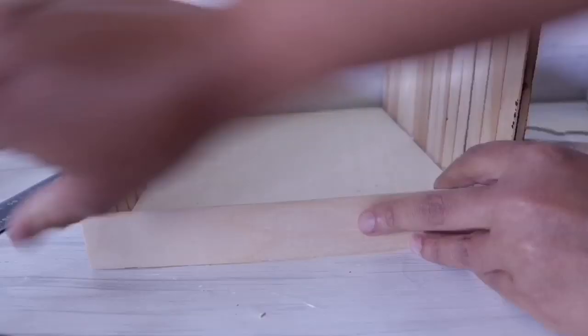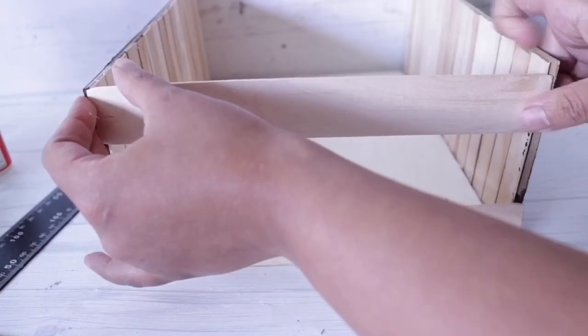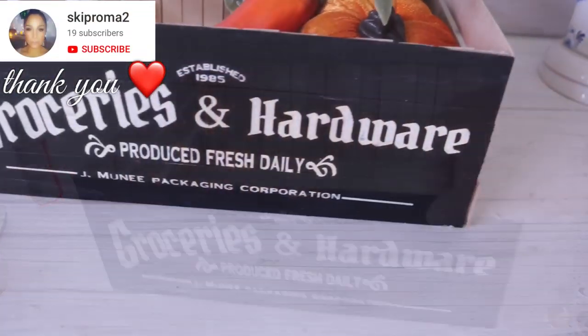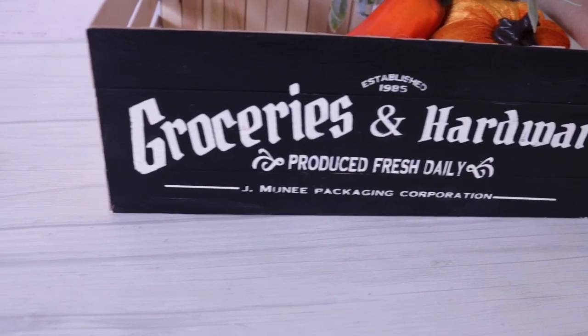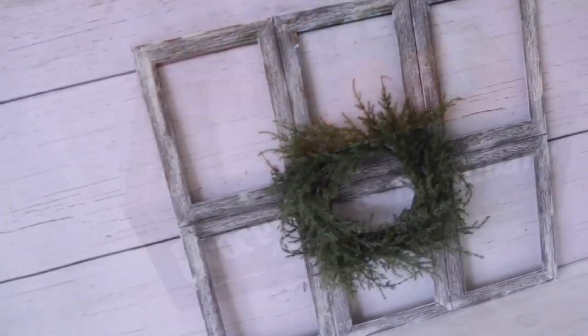For the sides I'm going to use some jumbo popsicle sticks. You can also use 97 cent stir sticks from Lowe's or Home Depot, but I have these from a previous tutorial, they're from Walmart in a pack of 40. I'm going to cut this down and add it to the sides. On both sides I used three on each side, and this ended up being really sturdy. I did one at the top, one at the bottom, and then the middle so they're nice and straight. When I was done I had this really cool custom crate.